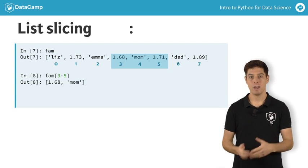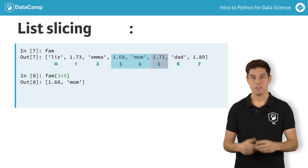Apparently, only the elements with index 3 and 4 get returned. The element with index 5 is not included.